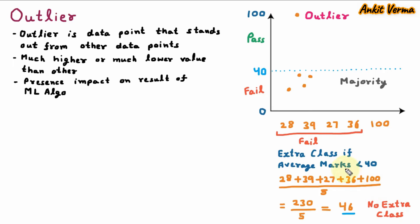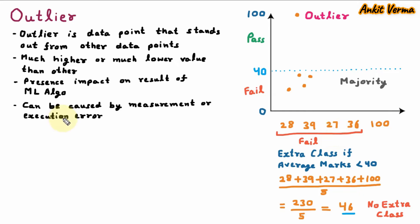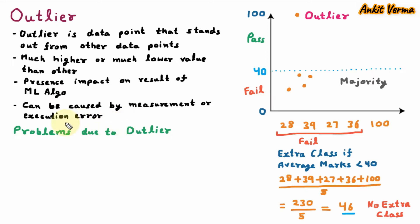Outlier can be caused by measurement error or execution error. If we are not measuring properly or not executing properly, in that case outlier comes.